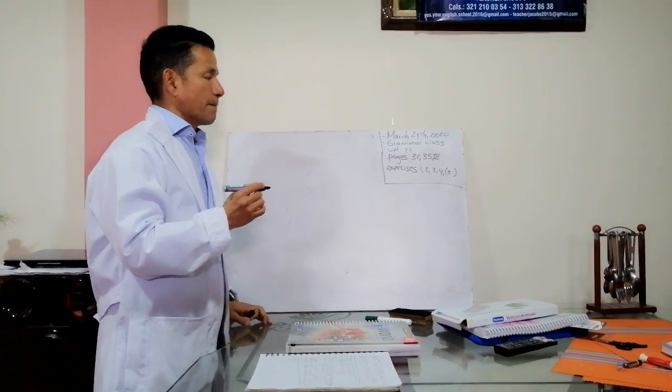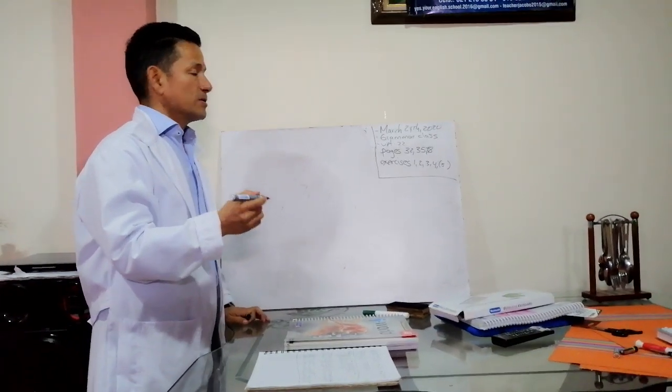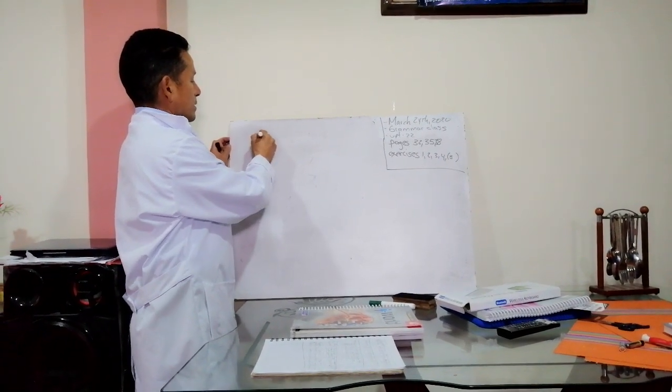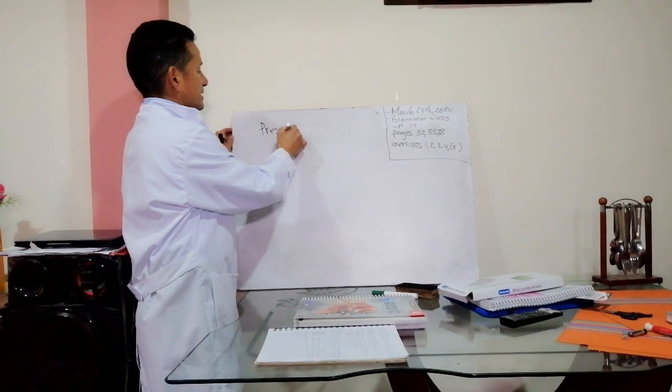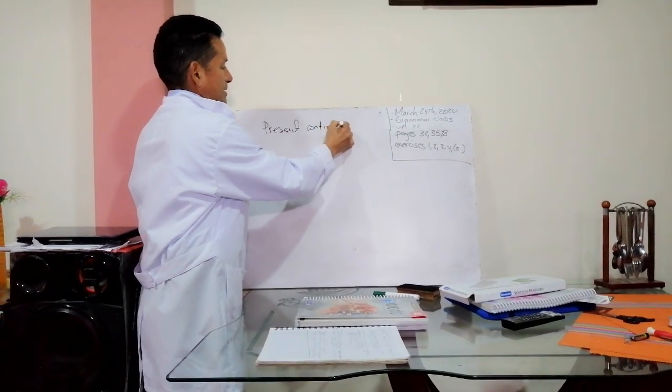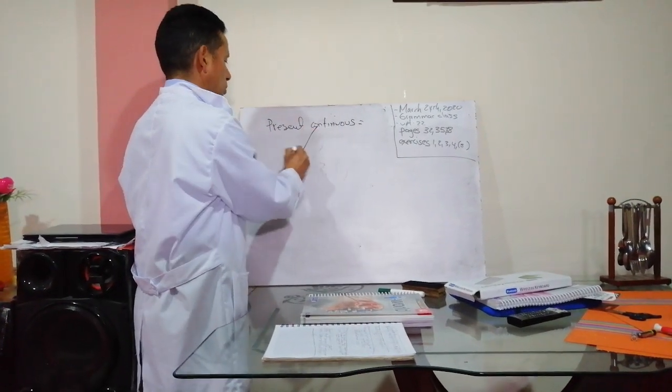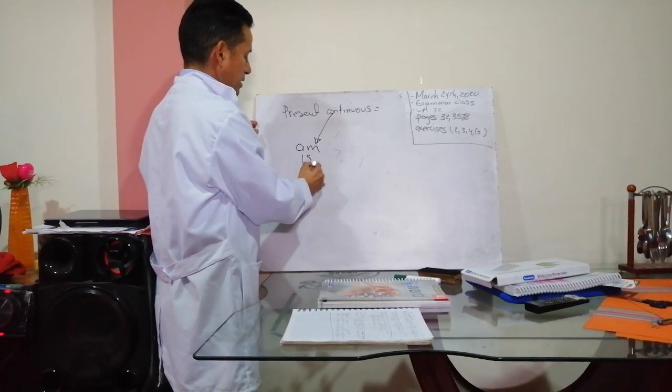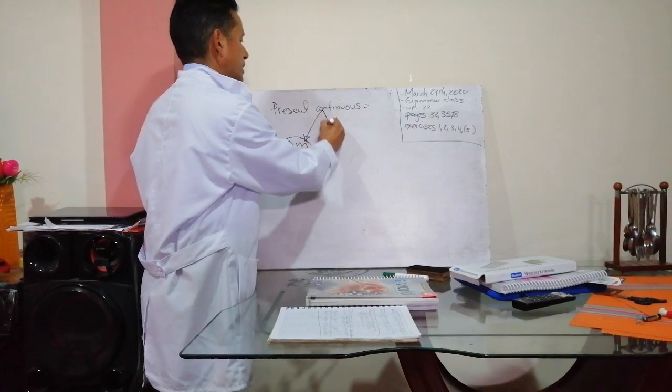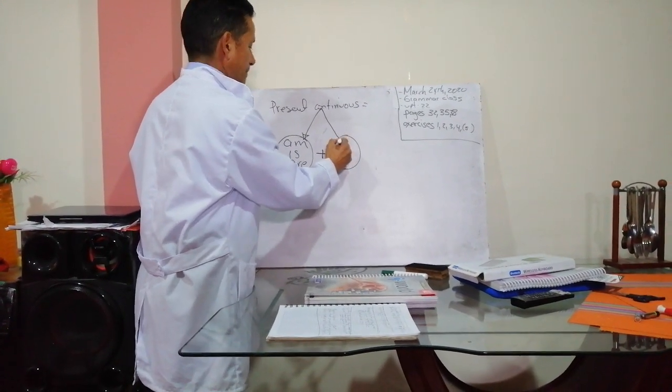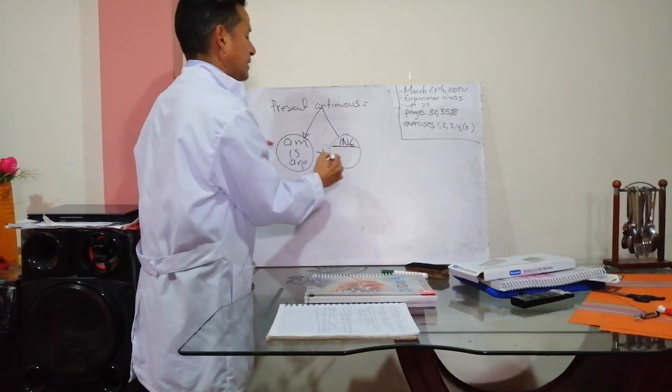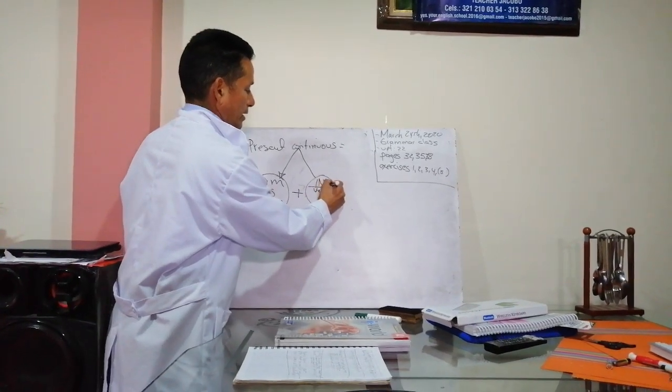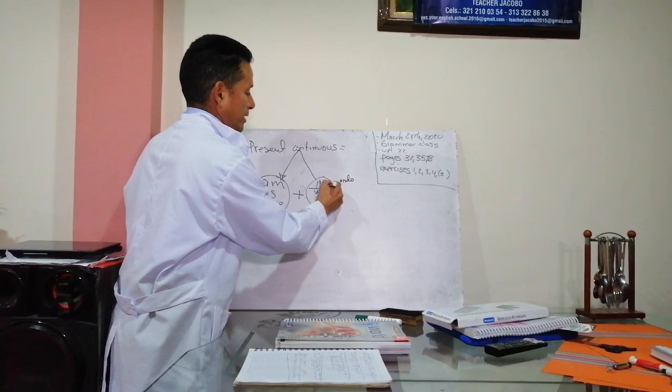Hoy vamos a ver el pasado continuo y el pasado simple. Vamos a empezar con el pasado continuo. Básicamente para el pasado continuo es importante saber qué es el presente continuo. Entonces present continuous, el presente continuo digamos que reúne dos cosas. Uno, para que haya presente continuo siempre tiene que estar el verbo to be. O sea, la palabra am, is y are. Este es el verbo to be. Y siempre tiene que estar acompañado del ING. Recuerde que el ING se le agrega a los verbos. Entonces uno cuando quiere formar una acción continuada uno agrega la palabra ING que en español sería como endo o ando.